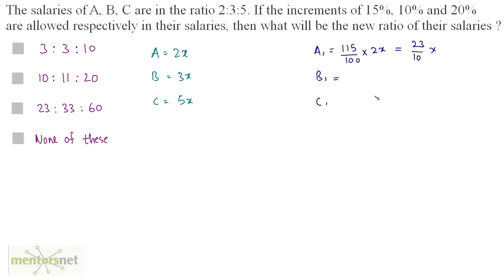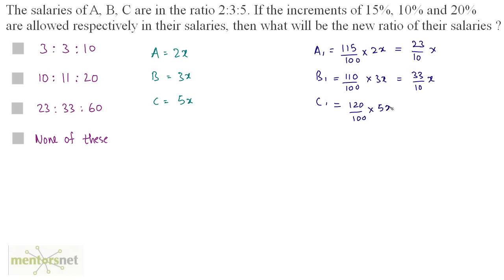Now let us calculate B's new salary. It is a 10% increment in the previous salary. So 110% of 3x, and when you solve this, B's salary equals 33/10 x. Now let us calculate C's salary — it is a 20% increase in 5x, so (120/100) times 5x, which equals 60/10 x.